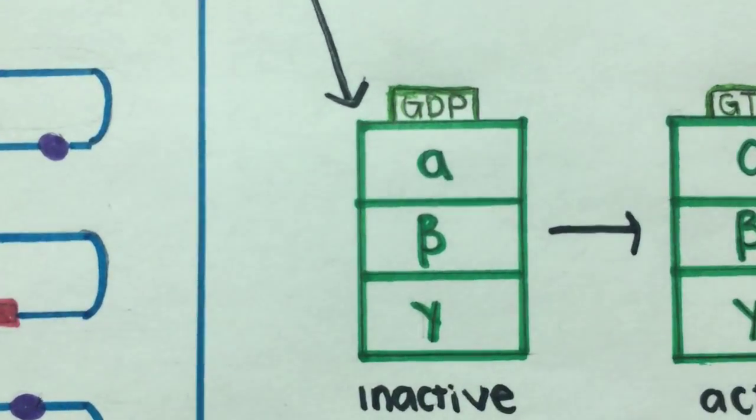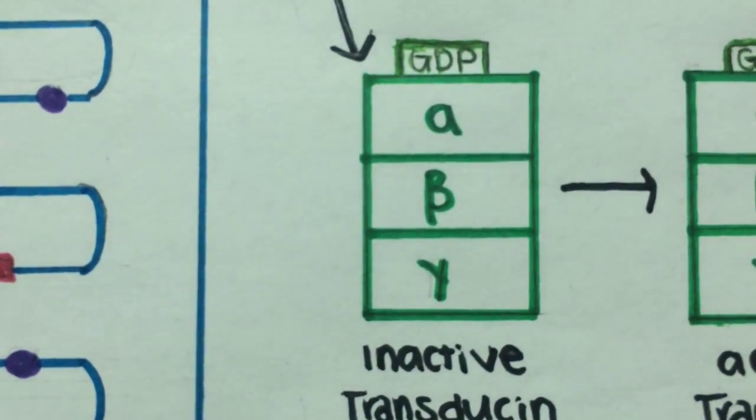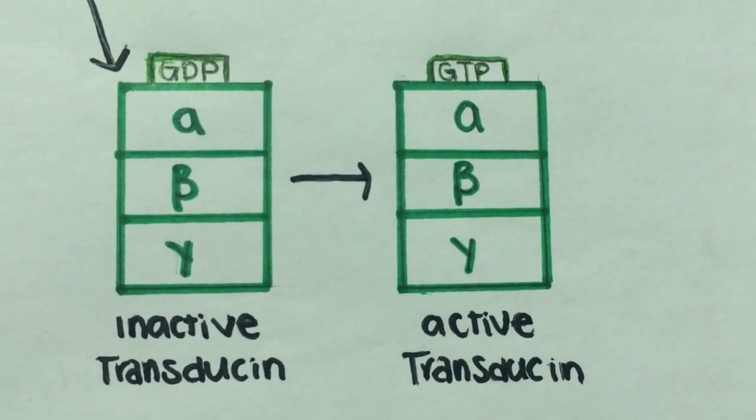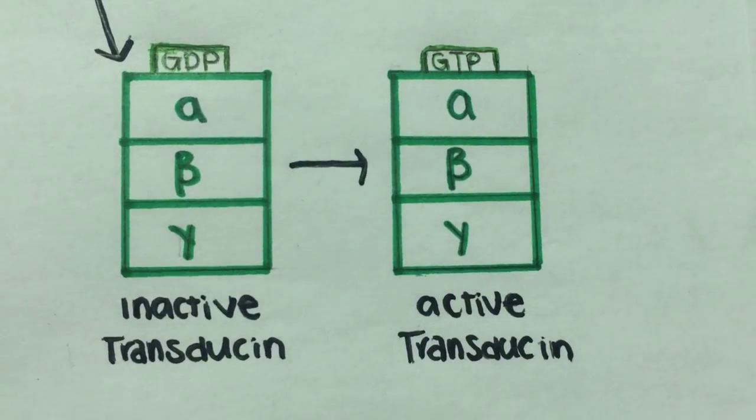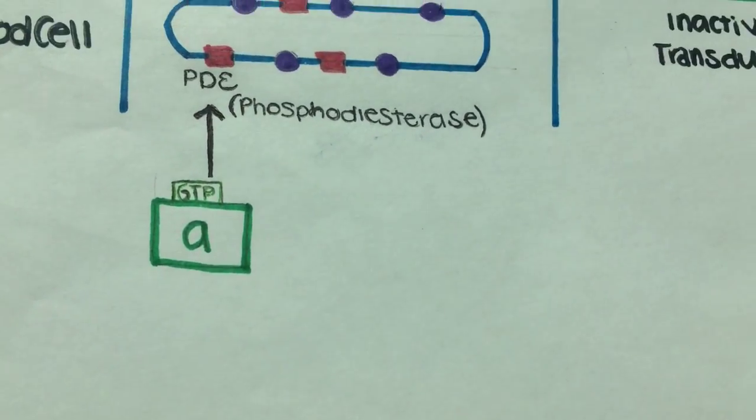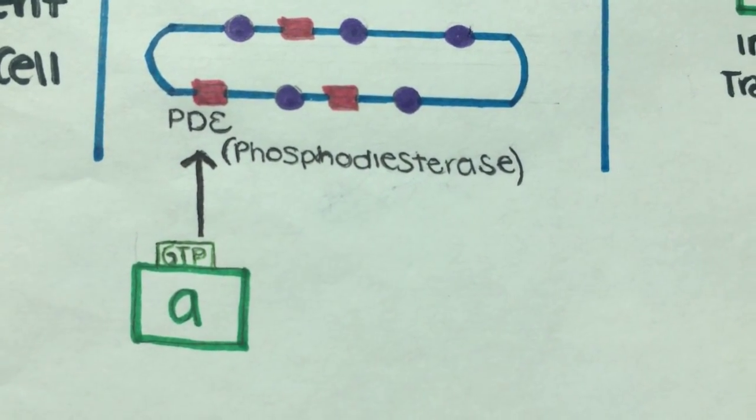The light also activates a G-protein called transducin, which in its inactive state is bound to GDP. After becoming activated, it is able to exchange GDP for GTP. Then, the GTP-bound alpha unit of transducin activates phosphodiesterase, or PDE.